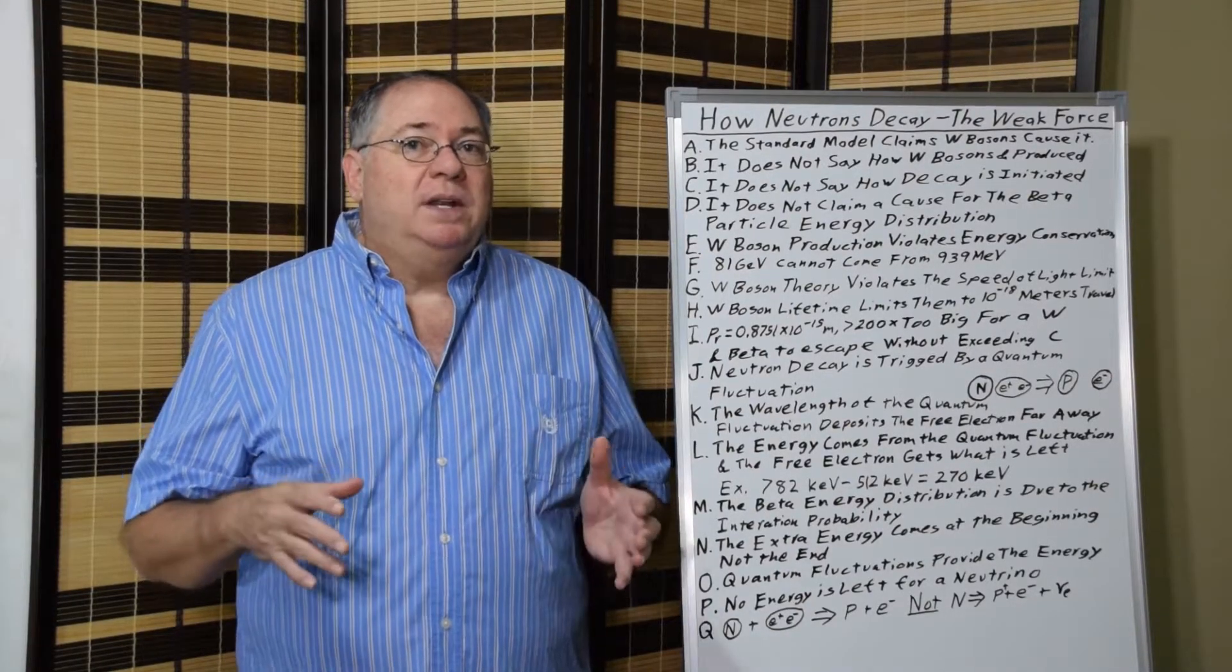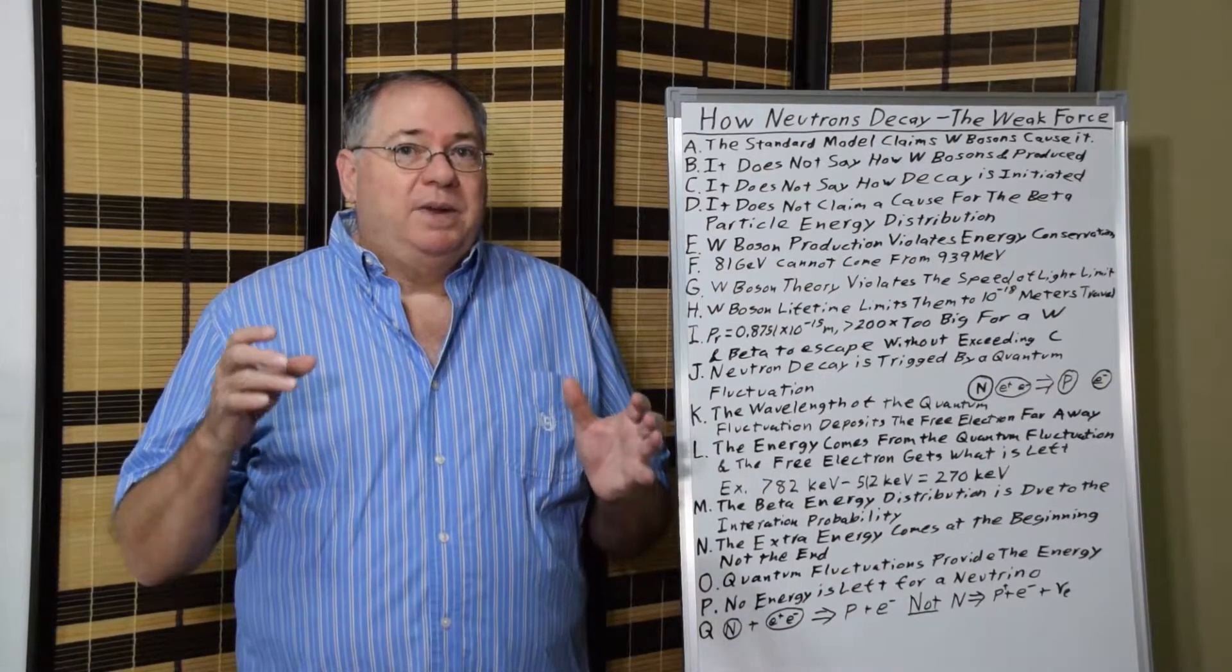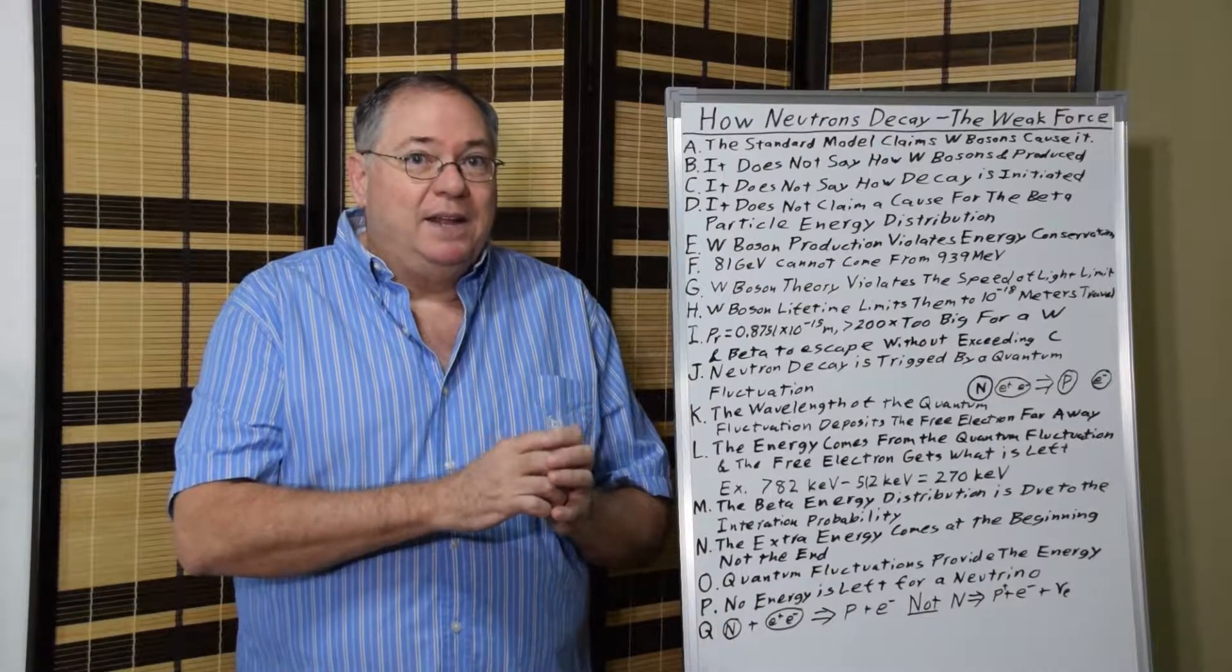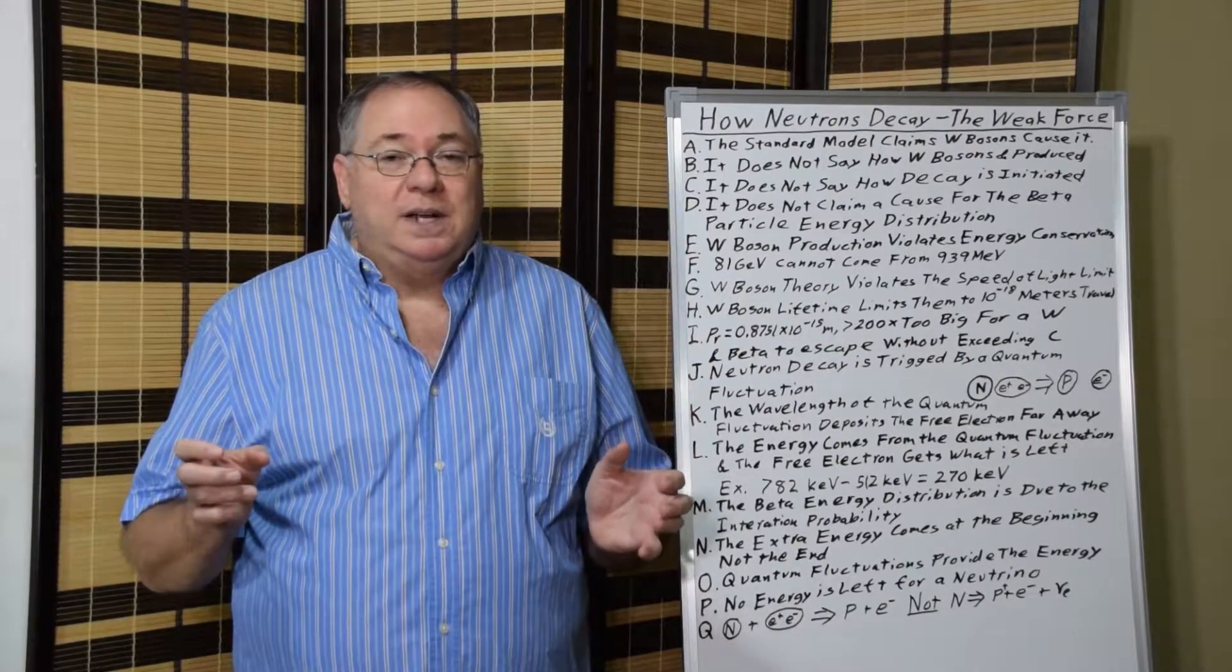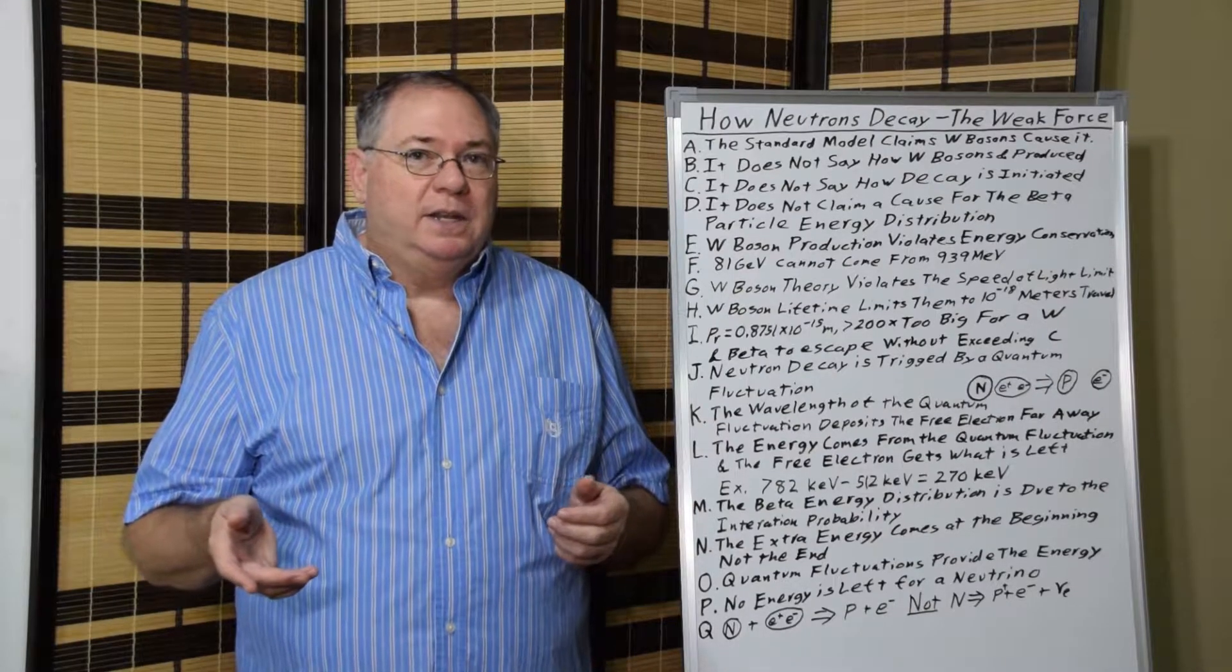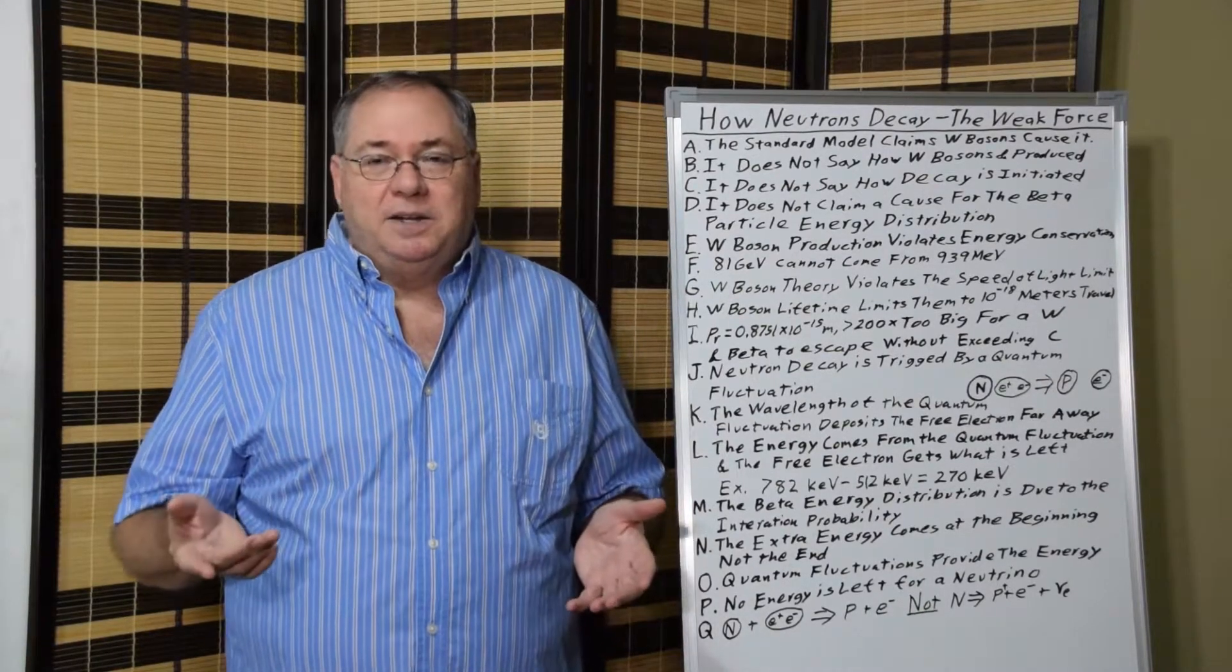But if we think of it in terms of just we have an electron and a proton, and we have an electron and proton together and then electron and protons separate, it gives us a simpler picture that helps us understand how decay occurs.